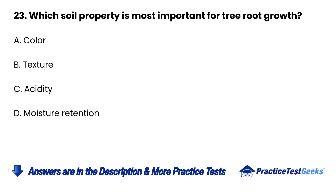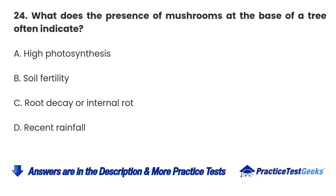Question 23. Which soil property is most important for tree root growth? A. Color. B. Texture. C. Acidity. D. Moisture retention.